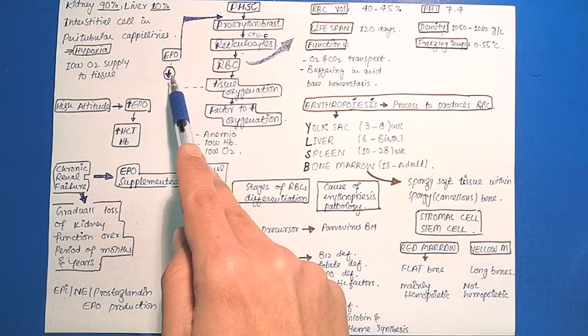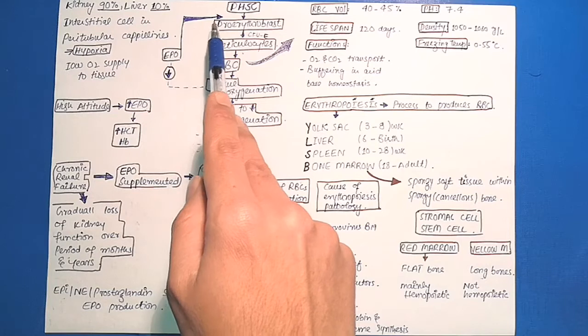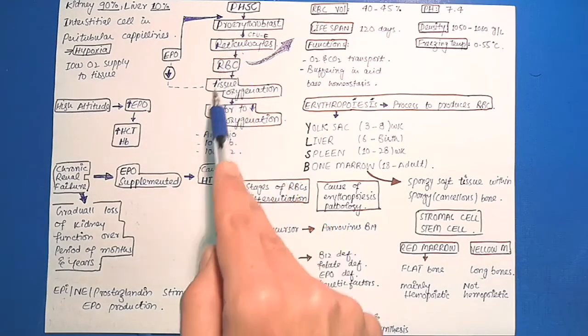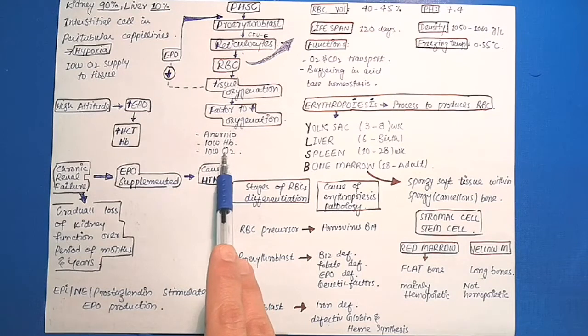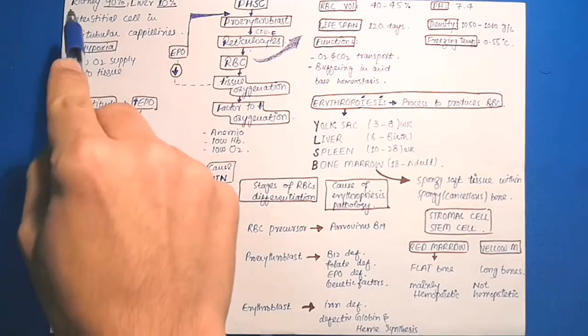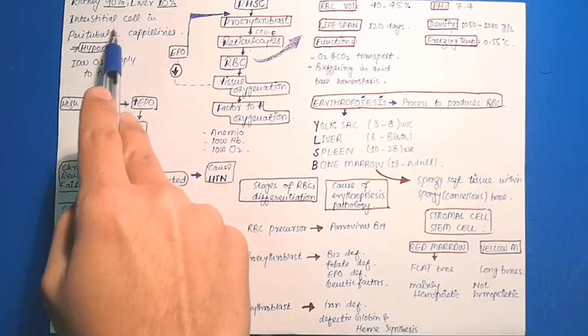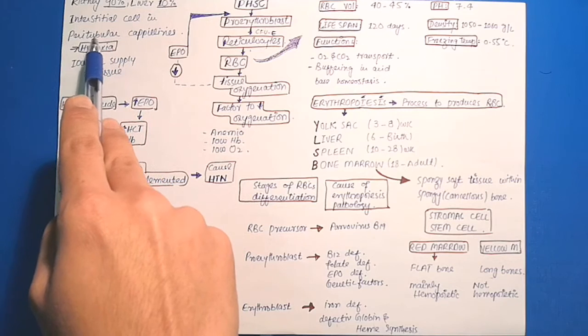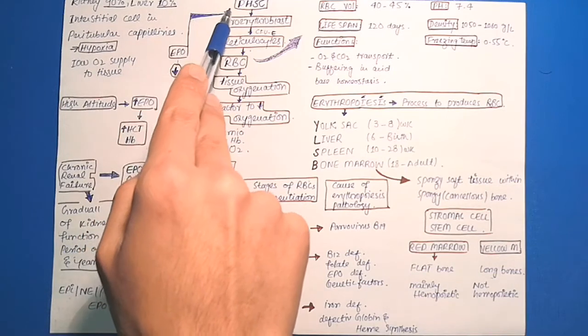If the oxygen level in the tissue is decreased, then erythropoietin will stimulate the production of proerythroblasts. Factors which decrease tissue oxygenation are anemia, low hemoglobin, and low oxygen supply. Normally, 90% of erythropoietin is formed in kidney and 10% in liver. In response to hypoxia, the interstitial cells in peritubular capillaries of kidney release erythropoietin, which stimulates the production of proerythroblasts.